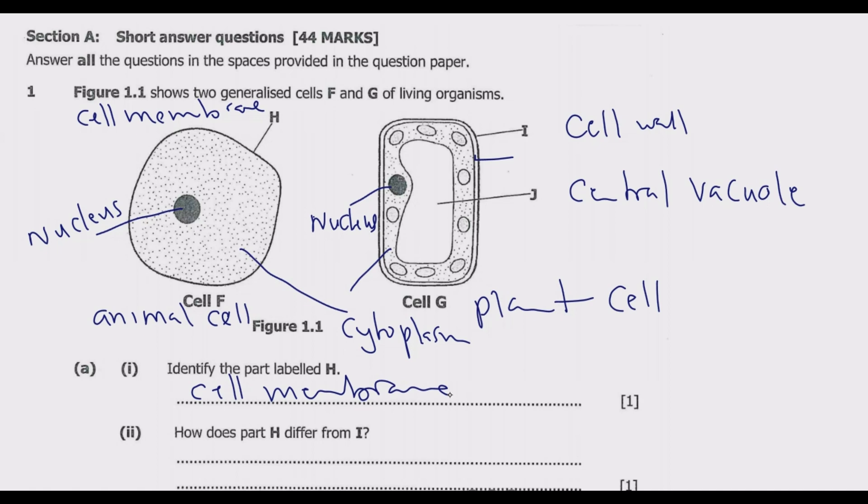Similarly, you have the cell wall that is found in the plant cell. This also acts similarly to the functions of the cell membrane, except that the cell wall provides structural support and protection to the cell. So what we need to say is: H is selectively permeable while I is fully permeable. Once you do that, you are good to go.